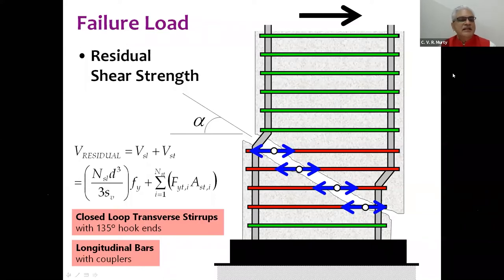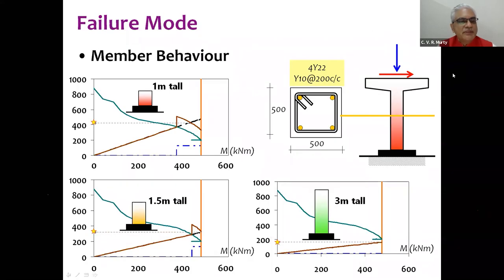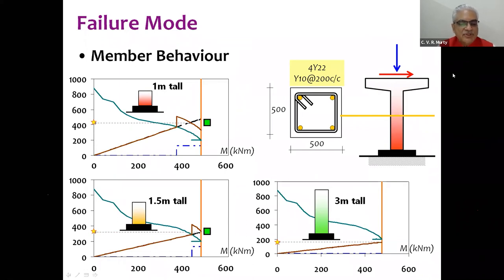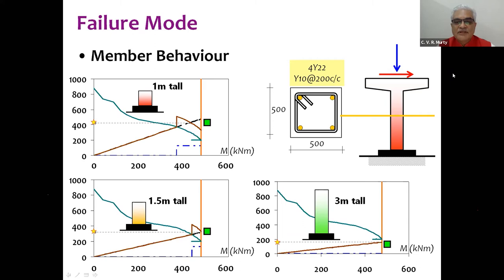We studied squat piers (1 m tall), intermediate piers (1.5 m), and slender piers (3 m) with the same cross section. The squat pier showed shear failure; the intermediate pier with L/d around 3 showed flexure-shear failure with both strengths close; and the slender pier showed flexure failure with shear strength much higher than flexural strength.